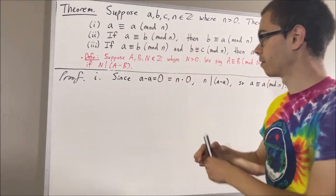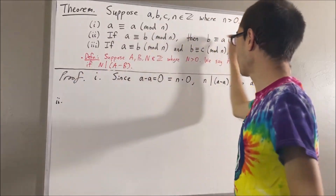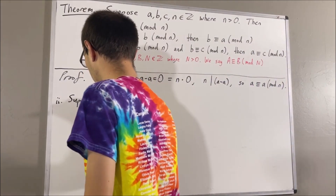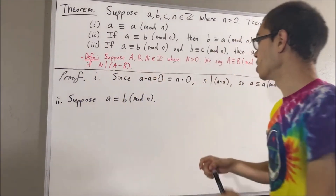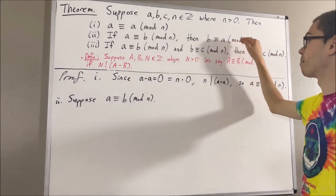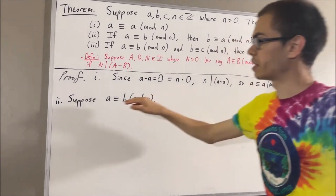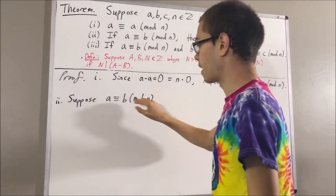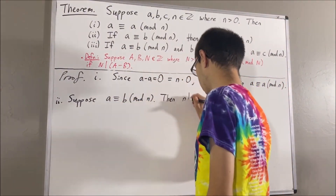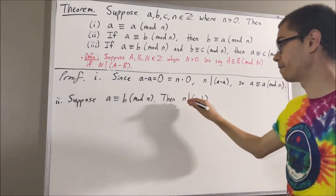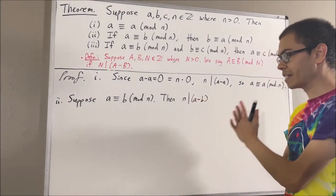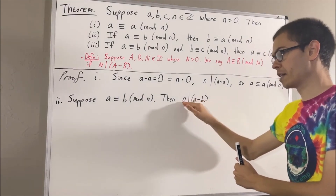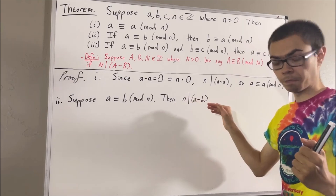Now, let's prove our second fact. To prove our second fact, let's suppose a is congruent to b modulo n. The whole goal from here is to show that b is congruent to a modulo n. Now, since a is congruent to b modulo n, this means by our definition that n divides a minus b. What does it mean for n to divide a minus b? It means that there exists an integer such that a minus b is equal to n times that integer. I'll call that integer k.